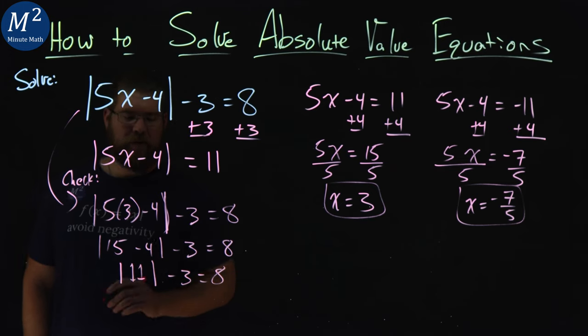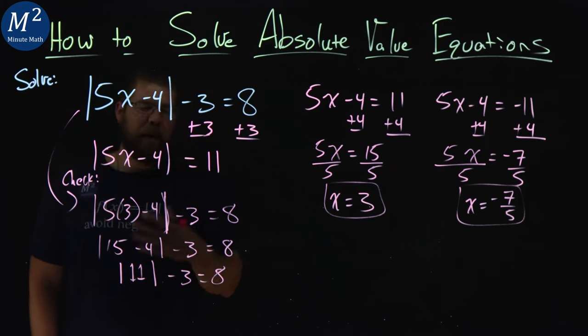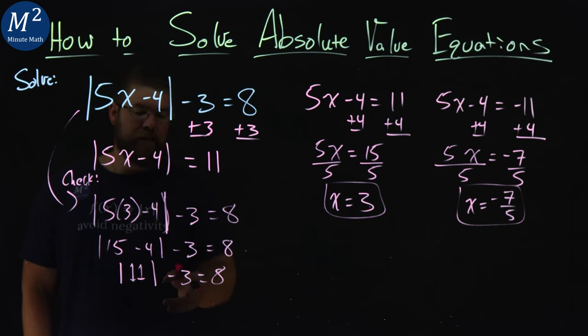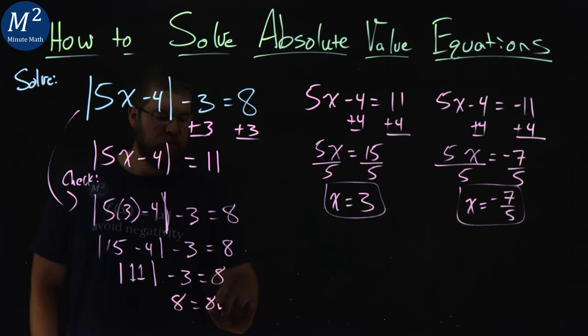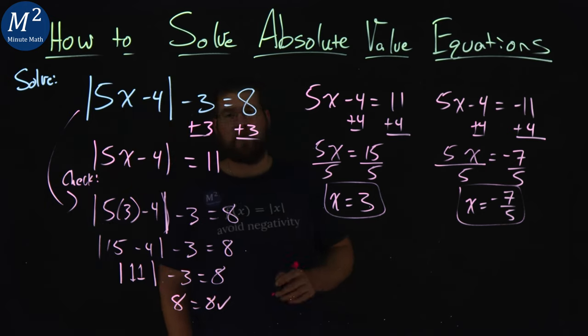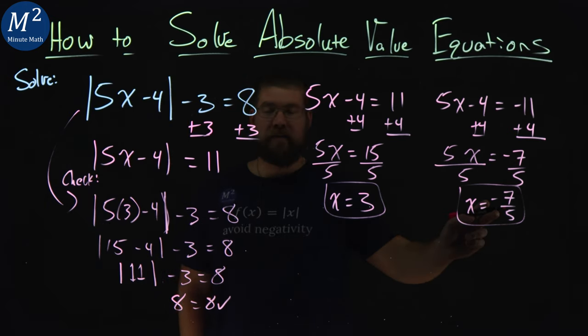Let's do this so it's a little easier. Absolute value of 11 is 11, minus 3 gives us an 8. So left and right hand side are equal. So let's do the same thing with our negative 7 fifths.